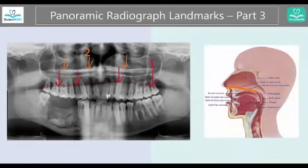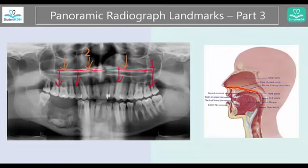Let's look at number two. Number two is this loosened radiolucent area. This is the hard palate. You can see it highlighted in orange here, and the soft palate is here. But this area — the hard palate — because it is bone, it is denser. That's why it is radiopaque. And this is the hard palate.